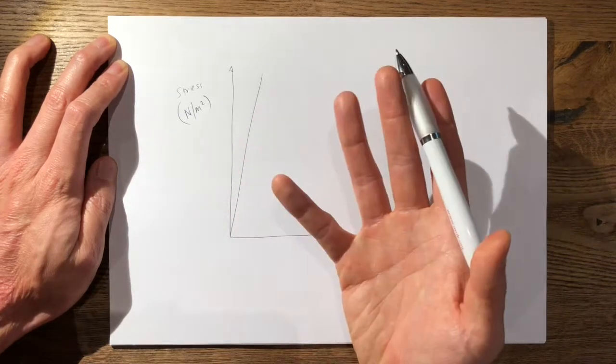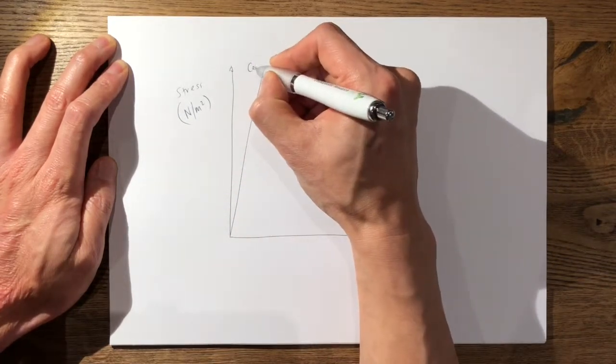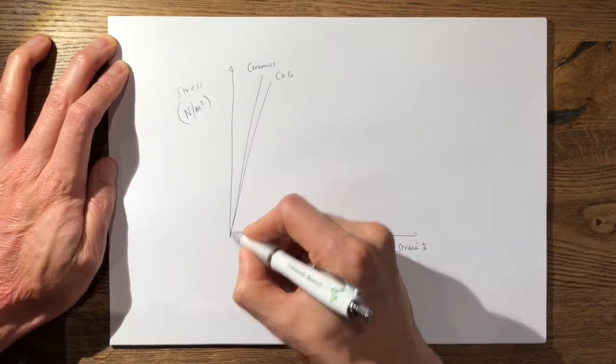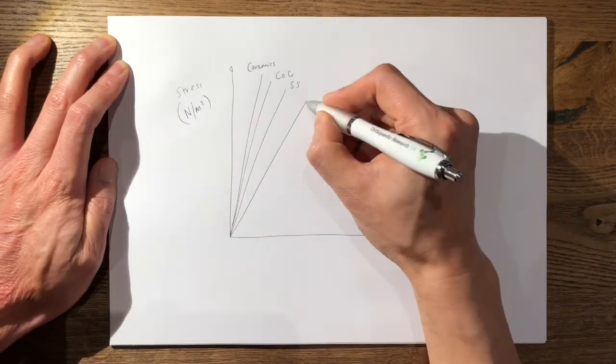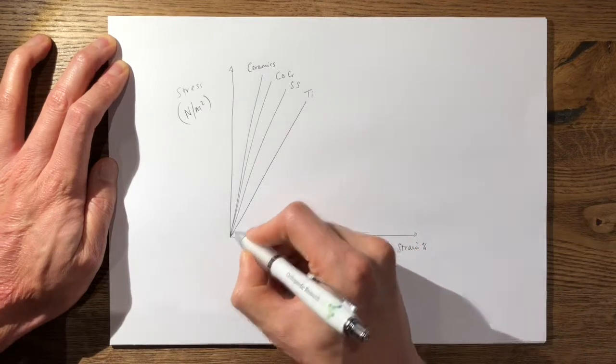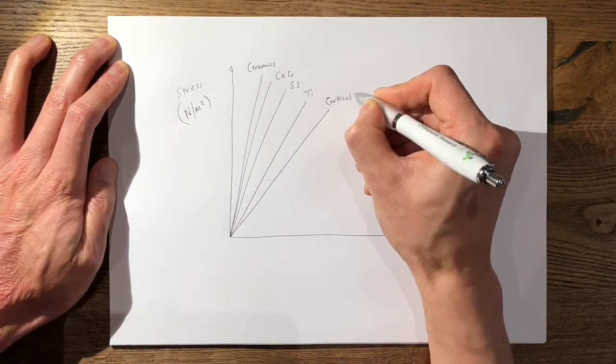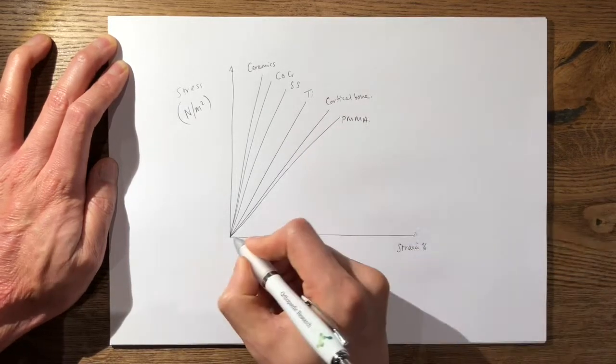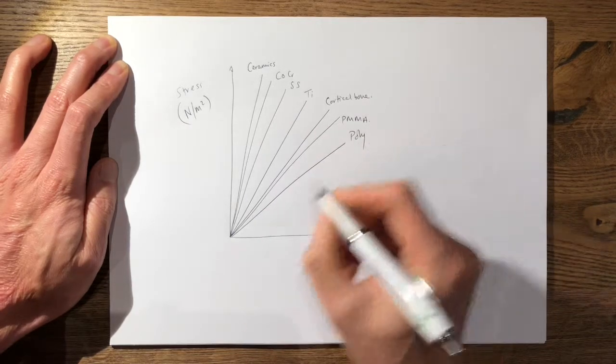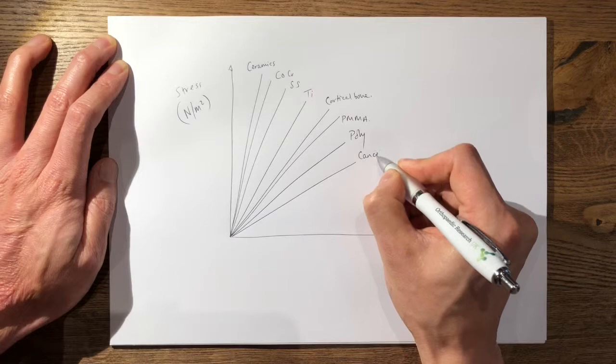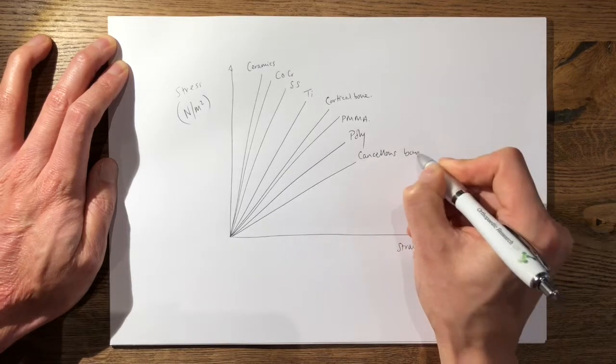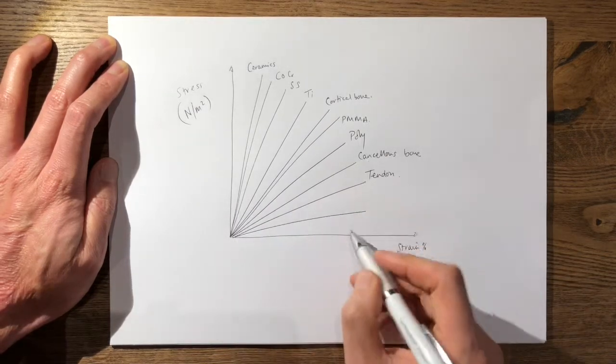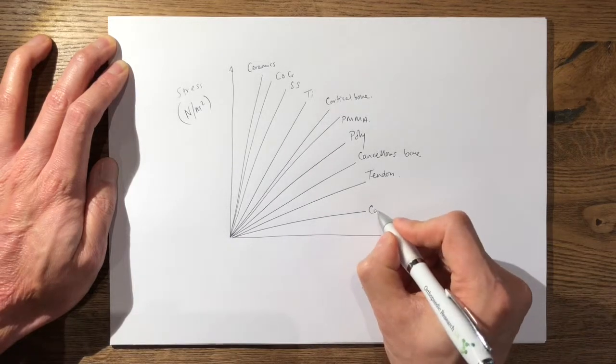So the stiffest material that we normally use in orthopedics are ceramics, next would be cobalt chrome, then we have stainless steel, then we have titanium, then we have cortical bone, then we have bone cement, then we have polyethylene, then we have cancellous bone, then we have tendon, and the most shallow gradient would be cartilage.